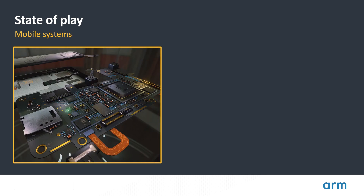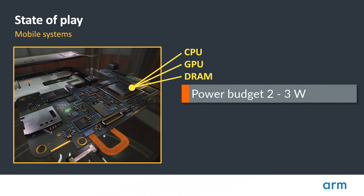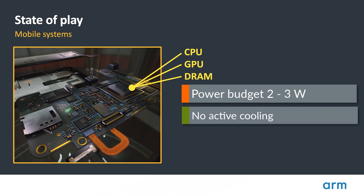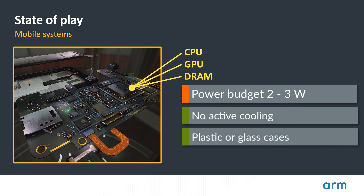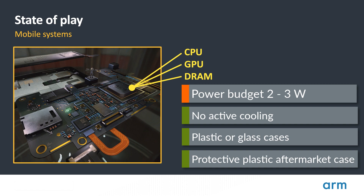By contrast, this is a typical mobile system. It uses a system on chip, with the CPU, GPU, and their supporting components on a single silicon die. The DRAM is a separate piece of silicon stacked on top of the main logic die in an arrangement called package-on-package. For a smartphone, the total sustainable power budget for the main SoC and its DRAM is somewhere between 2 and 3 watts. These systems rely exclusively on passive cooling — no fans, no high-area heat sinks. Phones are often designed with plastic or glass cases, neither of which are well known for thermal conductivity, and users often add aftermarket cases, making this a very challenging thermal environment.